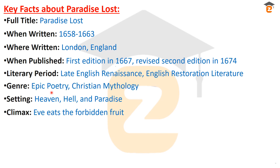The genre of this poem is epic poetry. This poem has a grand style and all the elements of the epic poem, as well as Christian mythologies. The setting of this poem is heaven, hell, and paradise. All the descriptions and stories by John Milton are related to heaven, hell, and paradise.